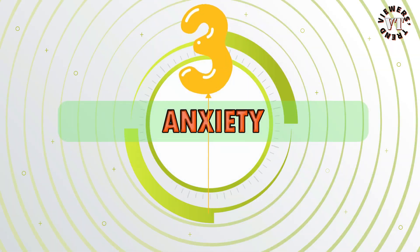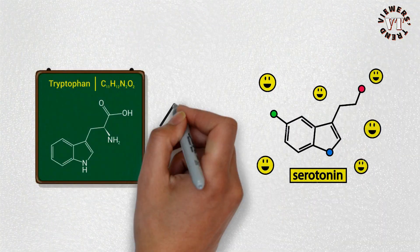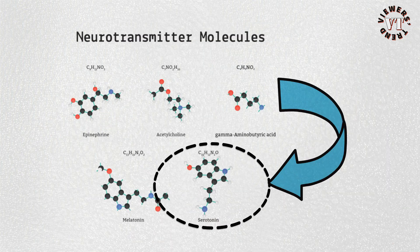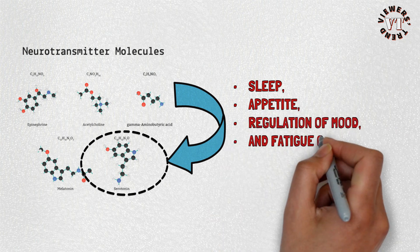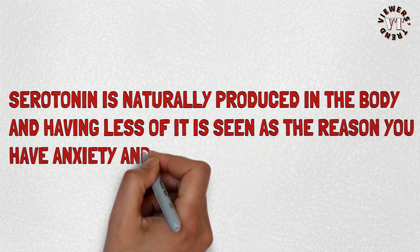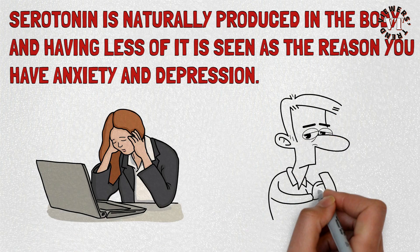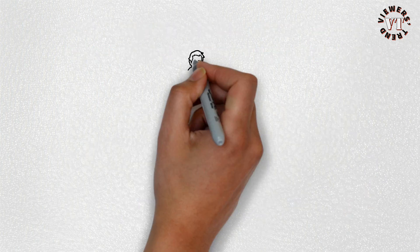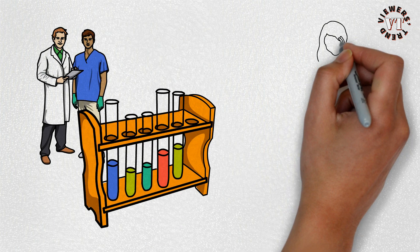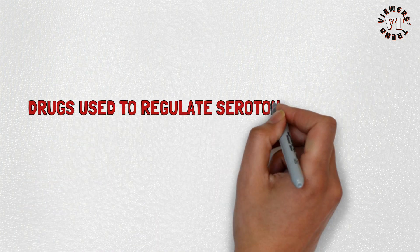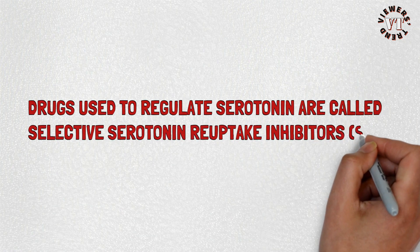3. Anxiety. Tryptophan is an amino acid related to serotonin. Serotonin is the neurotransmitter related to sleep, appetite, regulation of mood, and fatigue of your central nervous system. Serotonin is naturally produced in the body, and having less of it is seen as the reason you have anxiety and depression. Serotonin is often the target of many medications for anxiety and depression. Drugs used to regulate serotonin are called selective serotonin reuptake inhibitors, SSRIs.